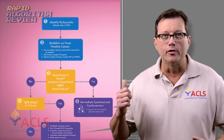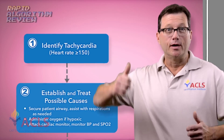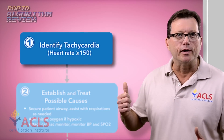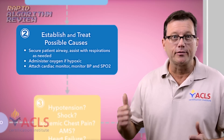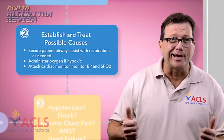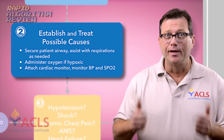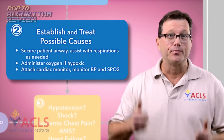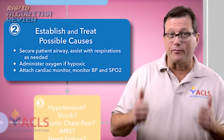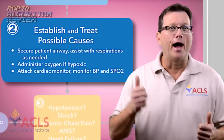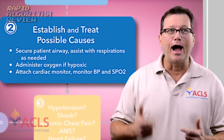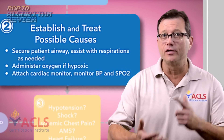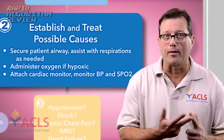Rapid-fire review. First, heart rate over 150. Next, why are they tachycardic? Try to figure that out. Next, ABCs: airway, provide them an airway, oxygen, IV, monitor their oximetry, supportive care.